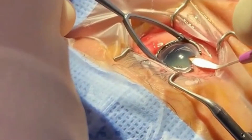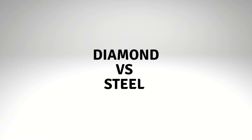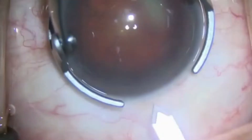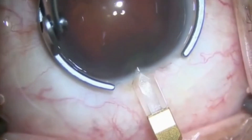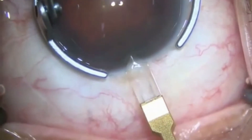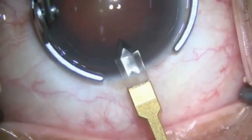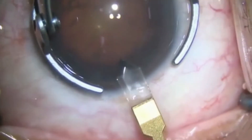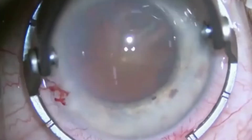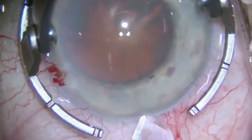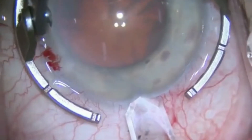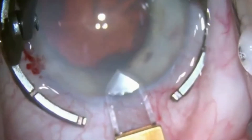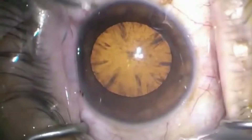At present, there are two types of blades for creating a clear corneal cataract incision: diamond and metal. The diamond keratome causes minimal distortion of corneal tissue, creates a more accurate and reproducible incision, and is much sharper than metal blades.